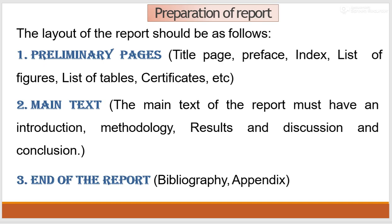Any research report is divided into three main parts: Number 1, Preliminary pages; Number 2, Main text; and Number 3, End of the report.